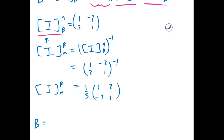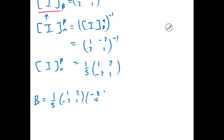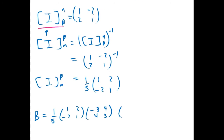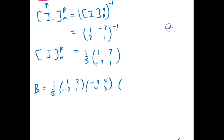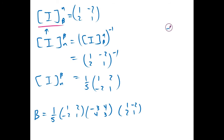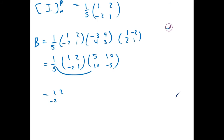B is therefore going to be (1/5) times [1,-2; 2,1] times A, which is [-3,4; 4,3], times the identity from beta to the normal basis, which is [1,2; -2,1]. Multiplying those out, we get [5,10; 10,-5], and multiplying by the 1/5, we get [1,2; 2,-1].